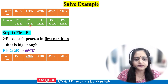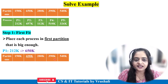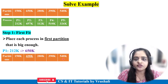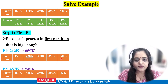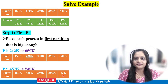Next is process P2 requiring 457KB. Checking sequentially: 150KB, 438KB, 280KB, 390KB — none are sufficient. P2 is executed in the 540KB partition. From 540KB, 457KB is used, leaving 83KB remaining.